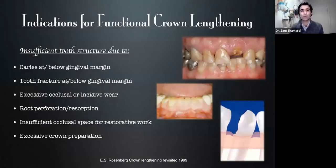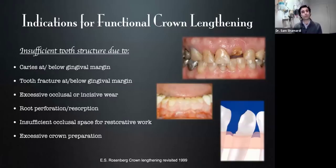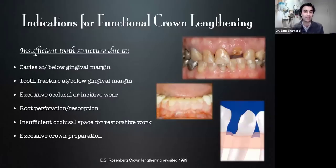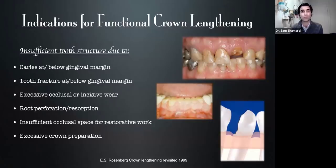When we look at indications for when we would want to do such a procedure, the primary reason is insufficient tooth structure. Why is there insufficient tooth structure? There are quite a few reasons: decay at or below the gingival margin, trauma in the form of a tooth fracture at or below the gingival margin, excessive occlusal or incisive wear from grinding, clenching, or general wear, root perforation or root resorption, insufficient occlusal space for restorative work, or cases where we have excessively prepared our crowns and put ourselves in that situation.